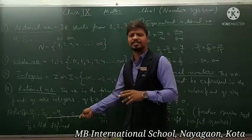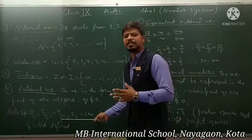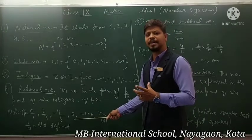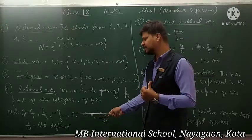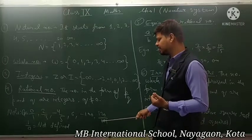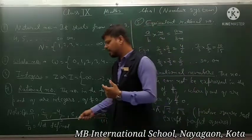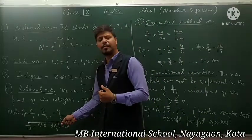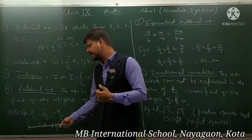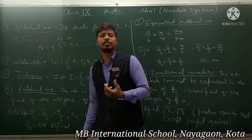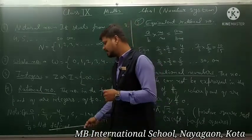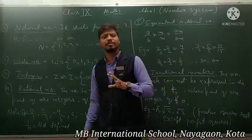Two upon three is another example of a rational number. Minus four upon five is also a rational number. Six is also a rational number because any number is always divisible by one. Minus 120 upon 161 is also a rational number. However, one upon zero is not a rational number — any number divided by zero is undefined, it is a not-defined number.